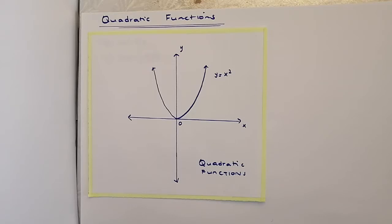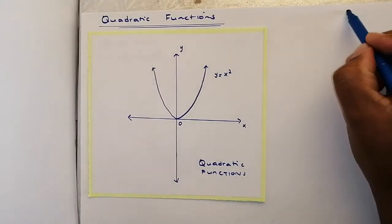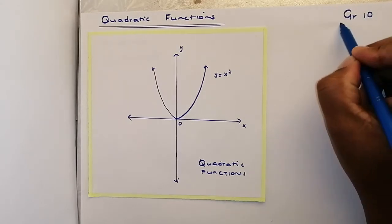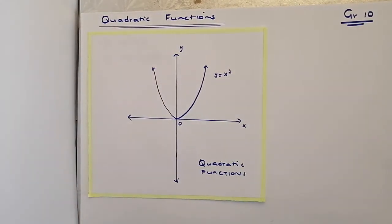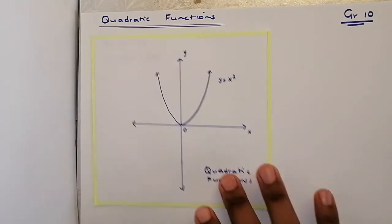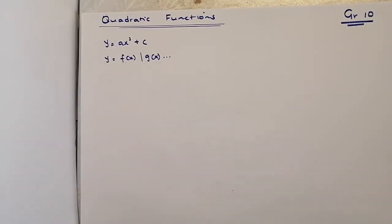In this video we're going to look at different maneuvers done on this function and the effect those maneuvers have on the equation of the function. For the sake of this video, we're going to limit ourselves to the vertical shift and the vertical stretch of the graph. So let's dive right in — y equals ax² + c is the equation we're going to use.